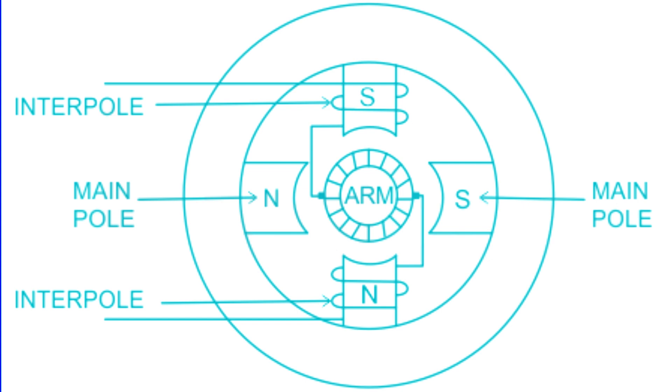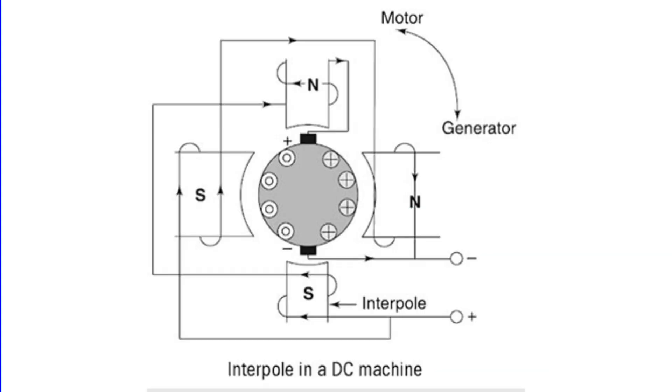Designed to neutralize the armature reaction MMF in the interpolar axis, interpoles play a pivotal role. They are connected in series with the armature, which allows the interpole to carry the armature current. This means that a change in the direction of the armature current will consequently change the direction of the interpole. The direction of armature reaction MMF is in the interpolar axis and the interpole provides commutation voltage for the coil undergoing commutation. This commutation voltage effectively neutralizes the reactance voltage, preventing sparking.